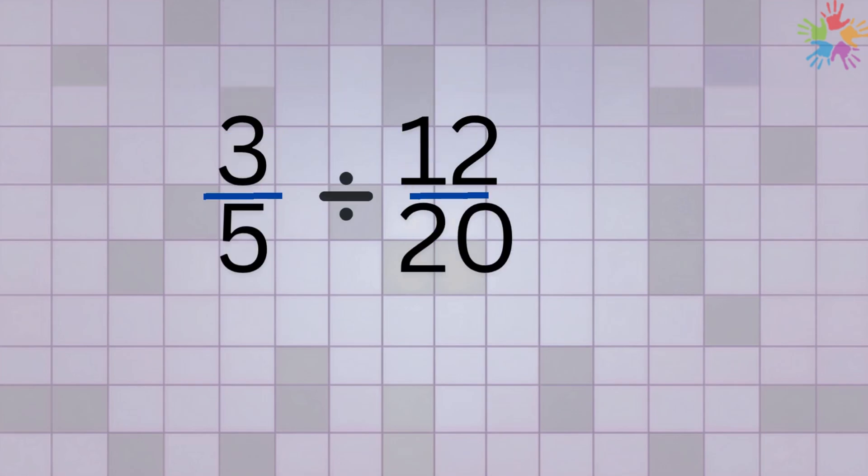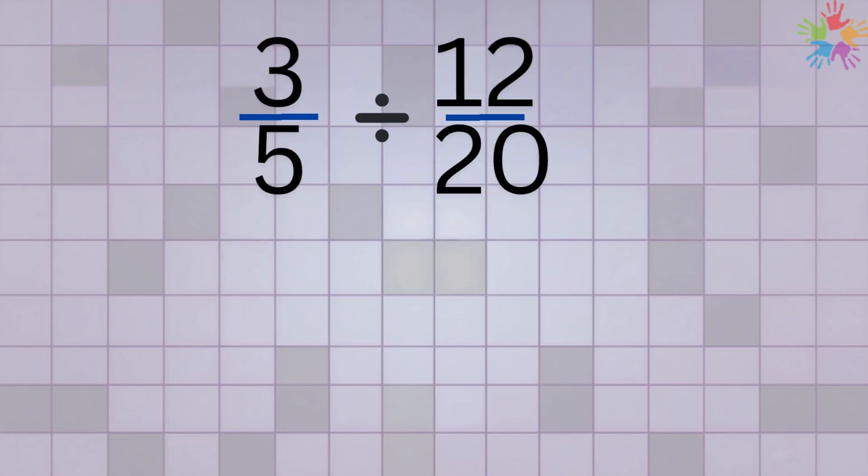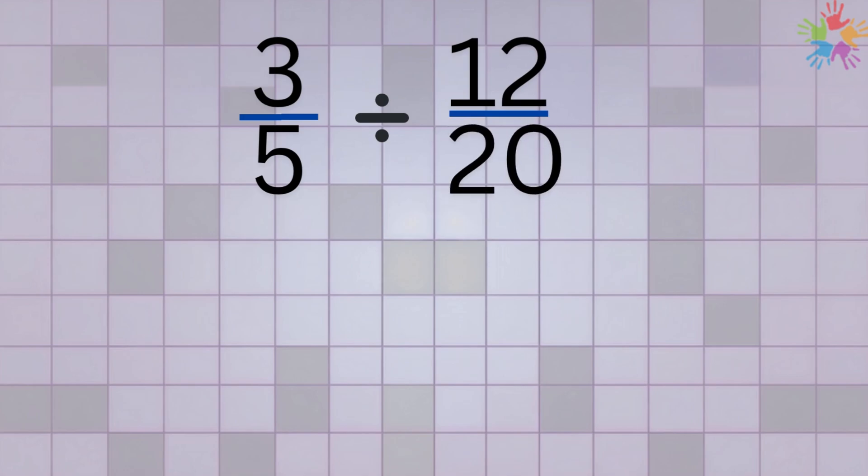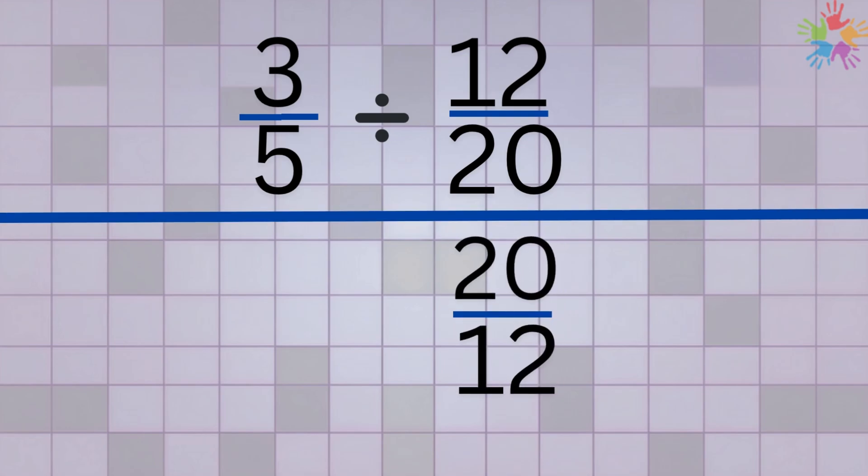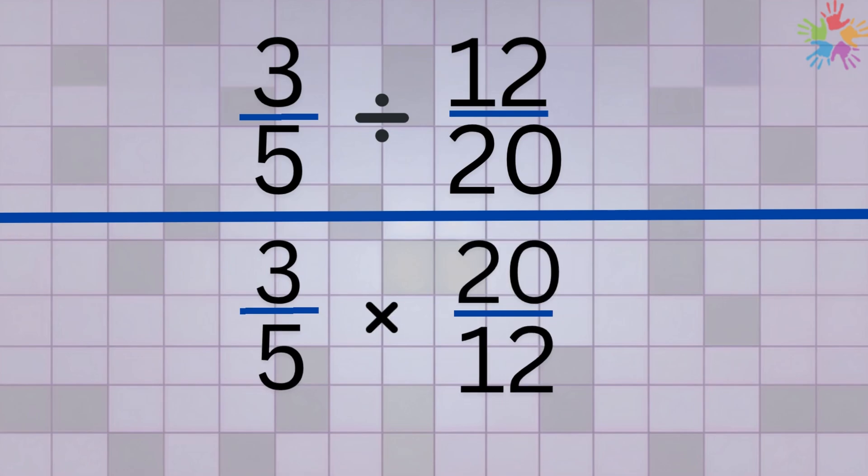Let's look at another example: 3 over 5 divided by 12 over 20. First, rewrite the problem. Instead of dividing by 12 over 20, we'll multiply by its reciprocal. The reciprocal of 12 over 20 is 20 over 12. So our new problem is 3 over 5 multiplied by 20 over 12.